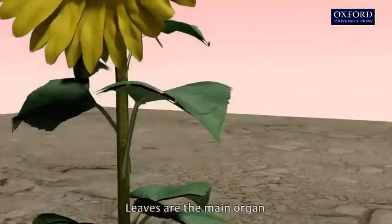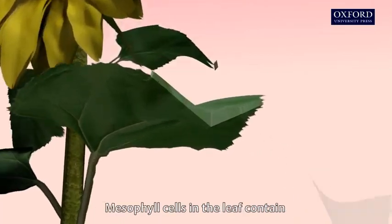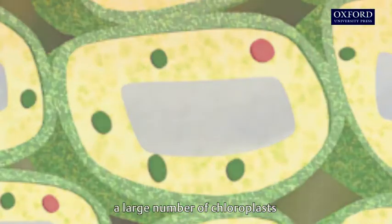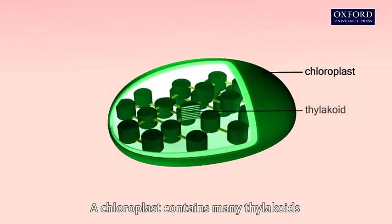Leaves are the main organ for carrying out photosynthesis. Mesophyll cells in the leaf contain a large number of chloroplasts. A chloroplast contains many thylakoids.